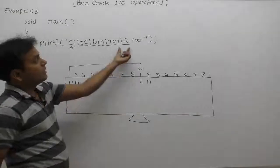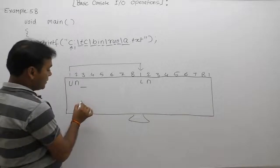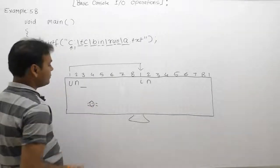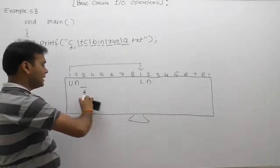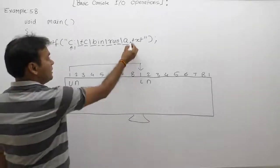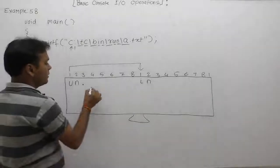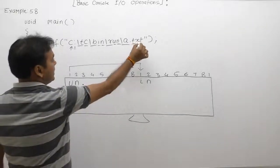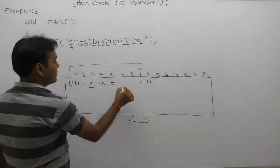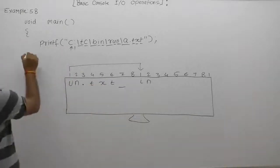Next is backslash a, which will simply generate a beep sound — it does not change the current position of the cursor. After that, it will display the dot character '.'. After displaying dot, the cursor moves to the fourth position, then it will print 'txt'. The cursor will be at the seventh position. This is the final result of the current print statement.